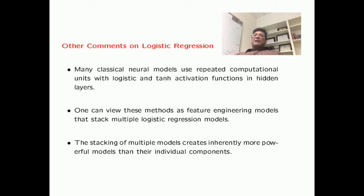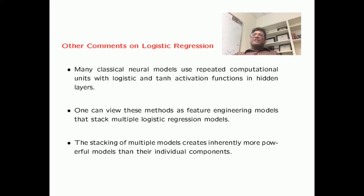Finally, one important point is that many classical neural models use repeated computational units with logistic and tanh activation functions. The tanh activation function is a scaled and translated version of the sigmoid activation function. So in both cases, these models are essentially using multiple logistic regression models across their different layers — it is almost like stacking logistic regression models. Stacking multiple models creates inherently more powerful models than their individual components, and this is one of the ways neural networks gain their power over these shallower models.